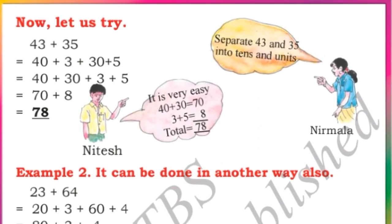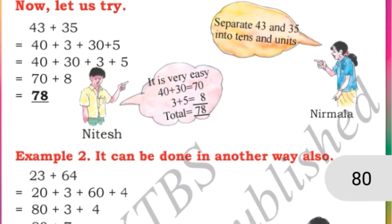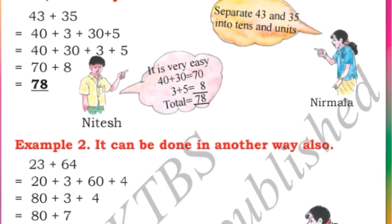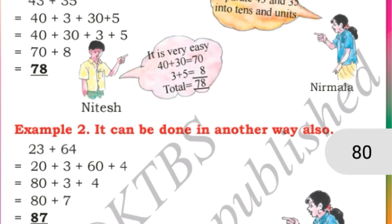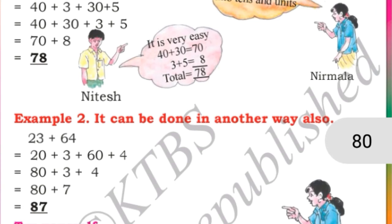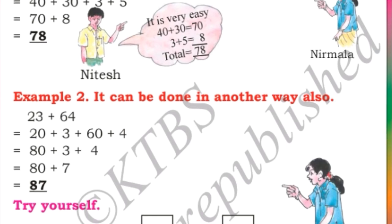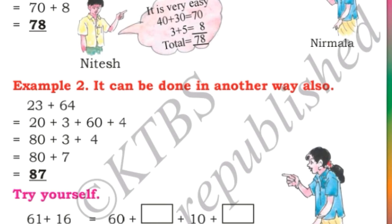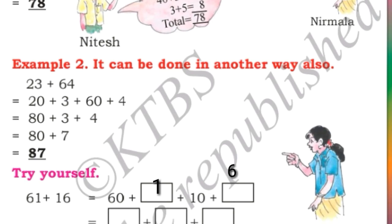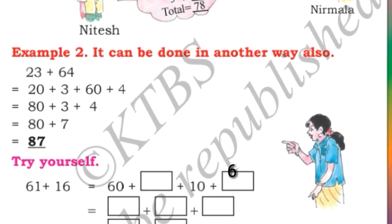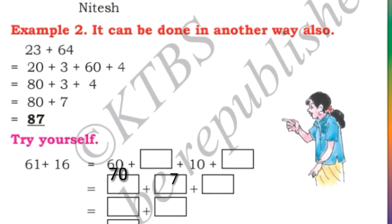We can try other problems also. See 43 plus 35: another method is to split the numbers and add. 43 is 40 plus 3, and 35 is 30 plus 5. So 40 plus 30 is 70, and 3 plus 5 is 8 — answer is 78. Now 61 plus 16: split 61 as 60 plus 1, and 16 as 10 plus 6. So 60 plus 10 is 70, and 1 plus 6 is 7 — answer is 77.